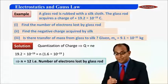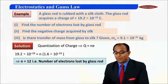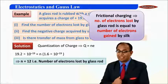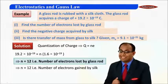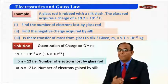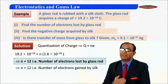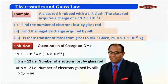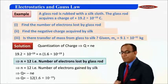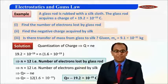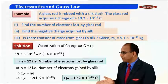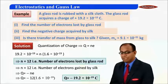Since electrons lost by the glass rod will be the same as electrons gained by silk, as it is the case of charging by friction, we can say that the charge on silk will be minus n × e, where n is 12 and e is 1.6 × 10⁻¹⁹. Applying the values, we get Q to be minus 19.2 × 10⁻¹⁹ coulomb.